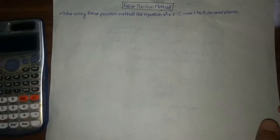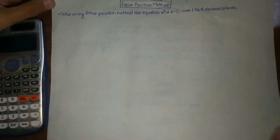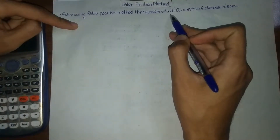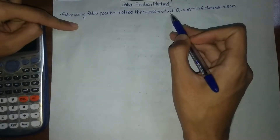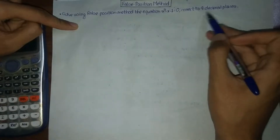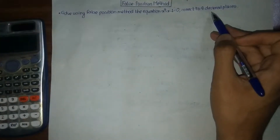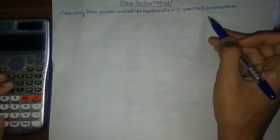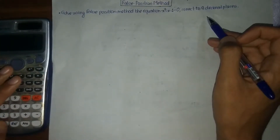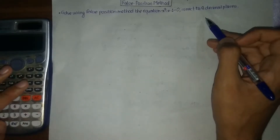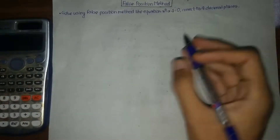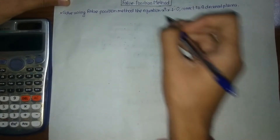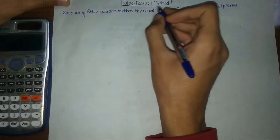Hello online viewers, welcome to our lecture video. In this lecture video we will be using the false position method and we will be solving the equation x cube minus x minus 1 equal to 0, finding the roots correct to 4 decimal places. We will be setting functions in our calculator so we can find the roots easily and quickly with less errors. Firstly, I will describe the false position method.